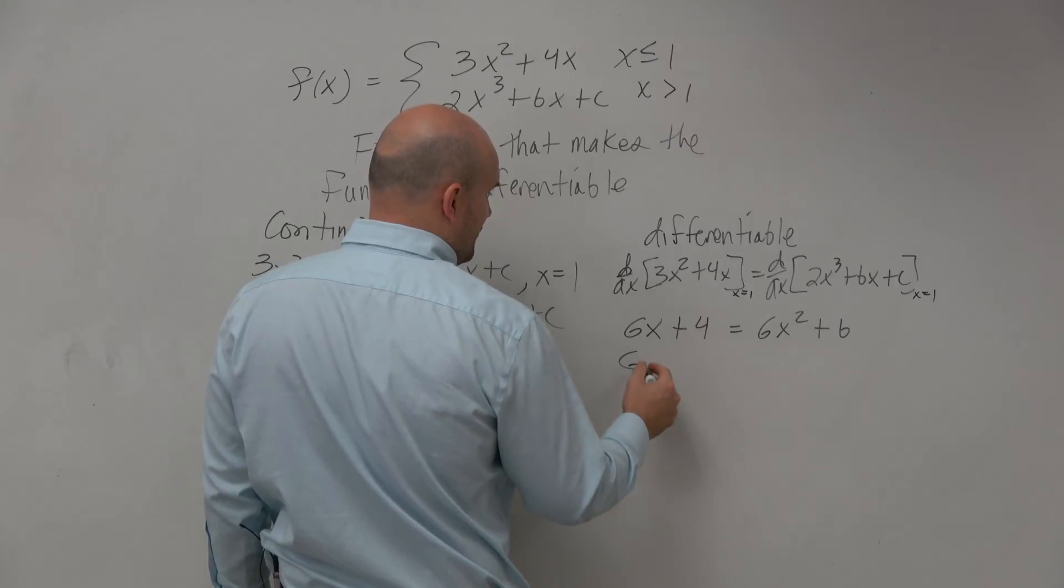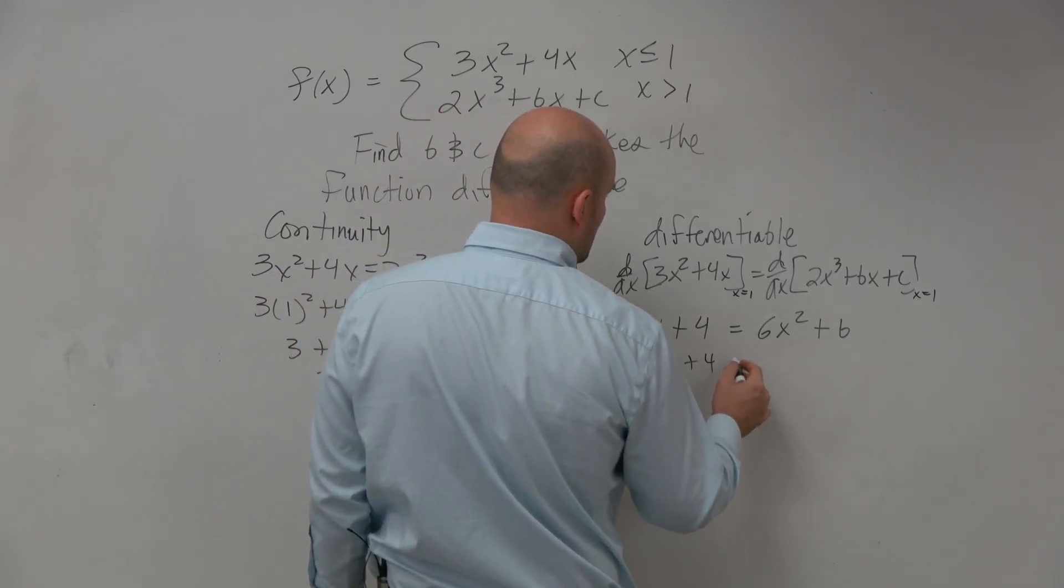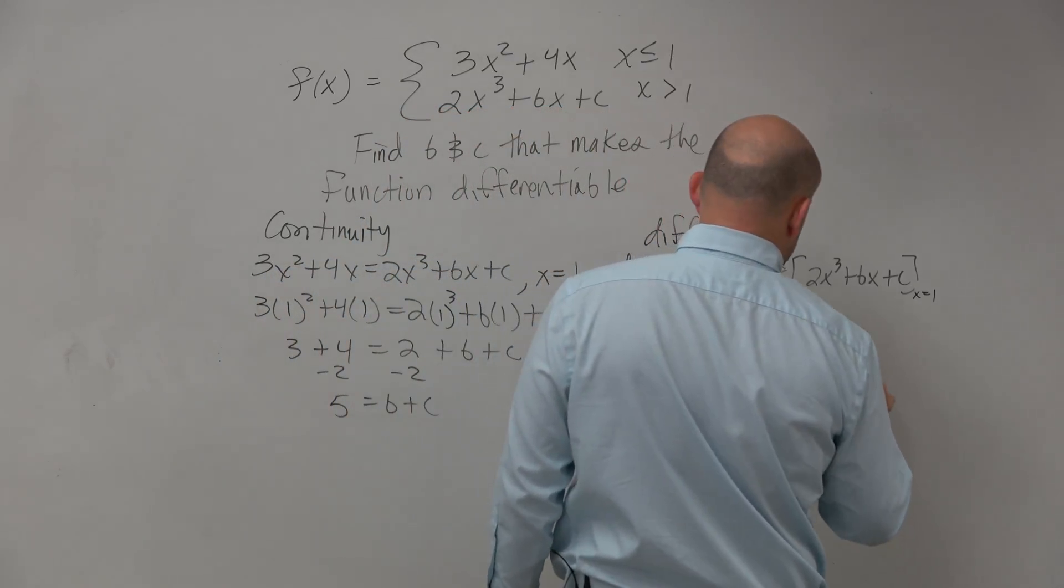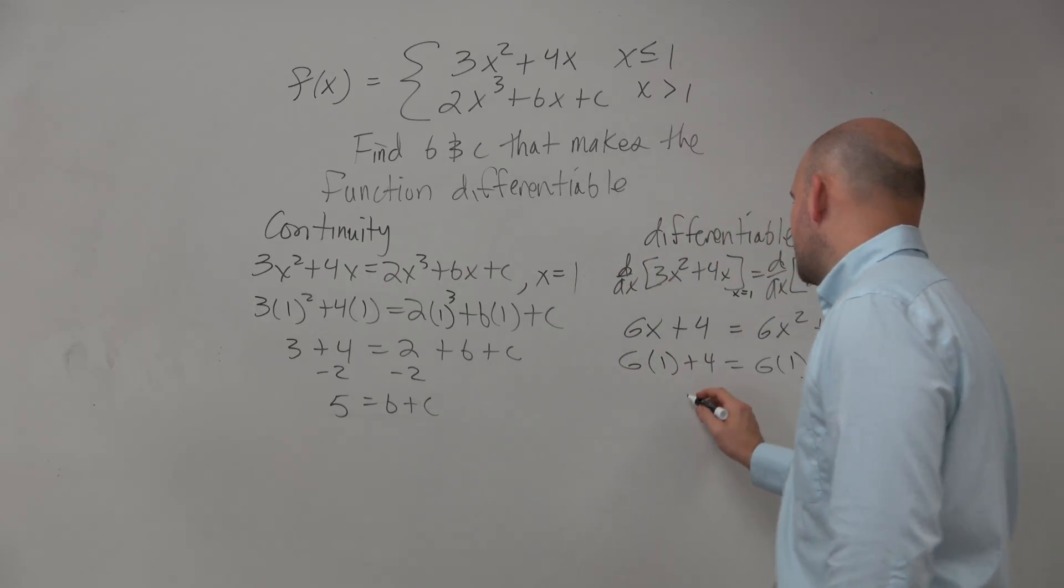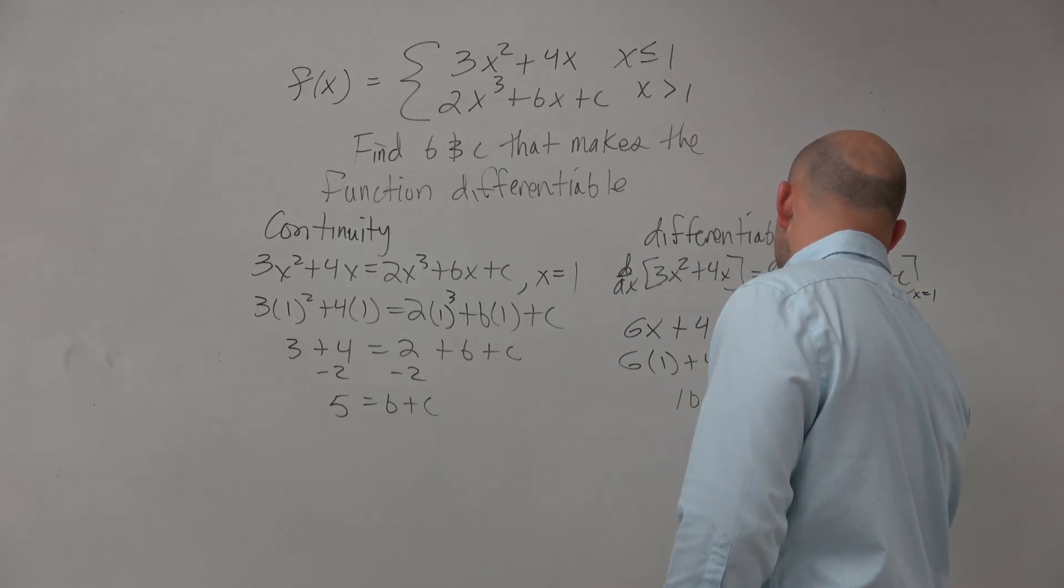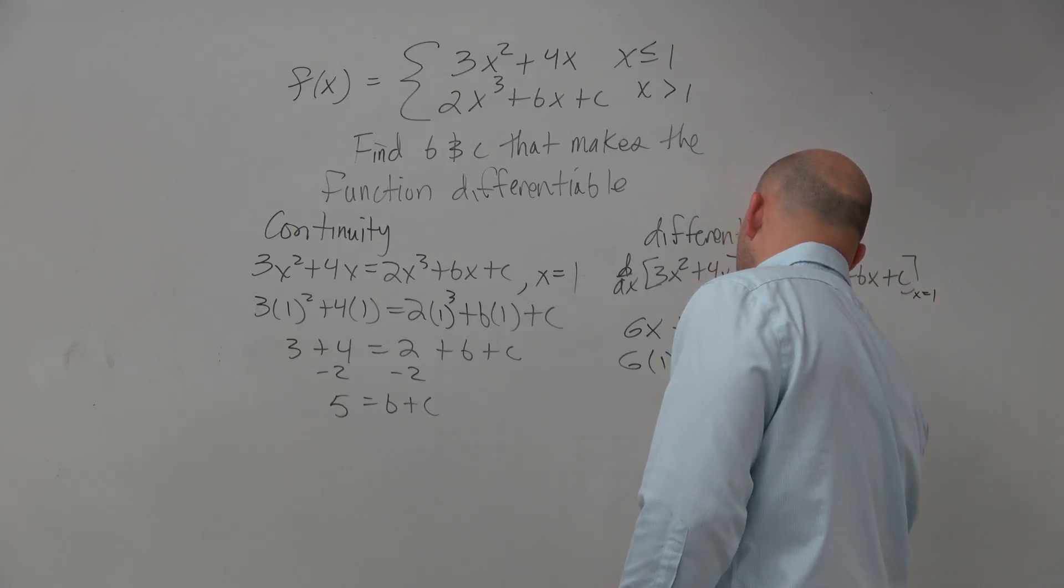Then we evaluate at 1. So 2 times 1 plus 4 has to equal 6 times 1 squared plus b. 6 plus 1 is going to be 10 equals 6 plus b. Subtract 6, subtract 6. 4 equals b.